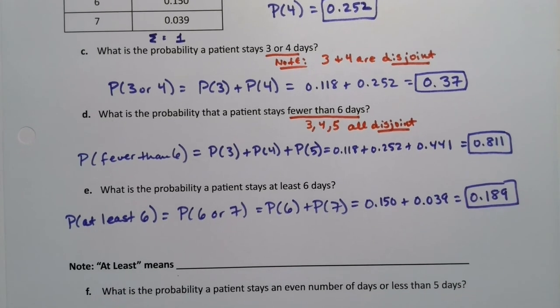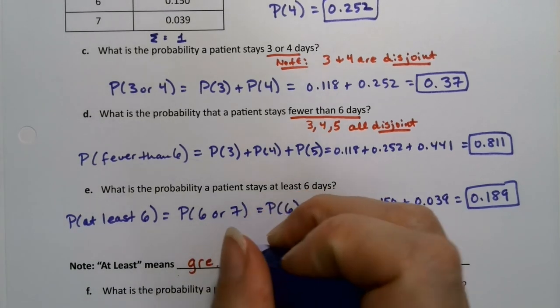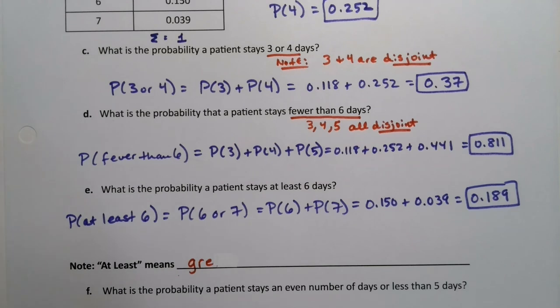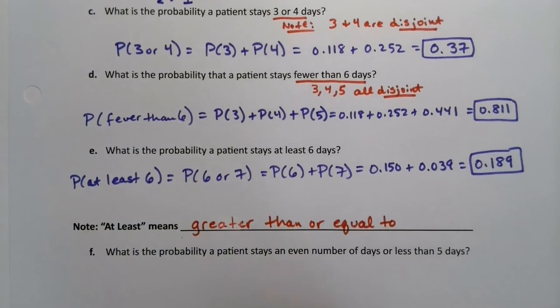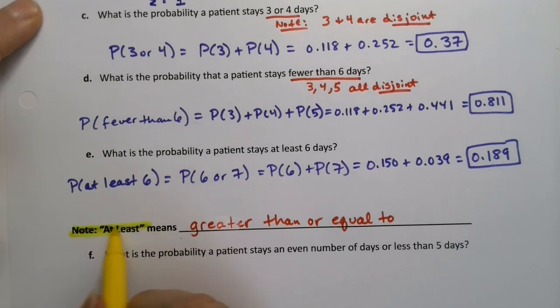Let's make a note: at least means greater than or equal to. Very important definition. I'm going to give that a little highlight because we're going to use that one again. Greater than or equal to.